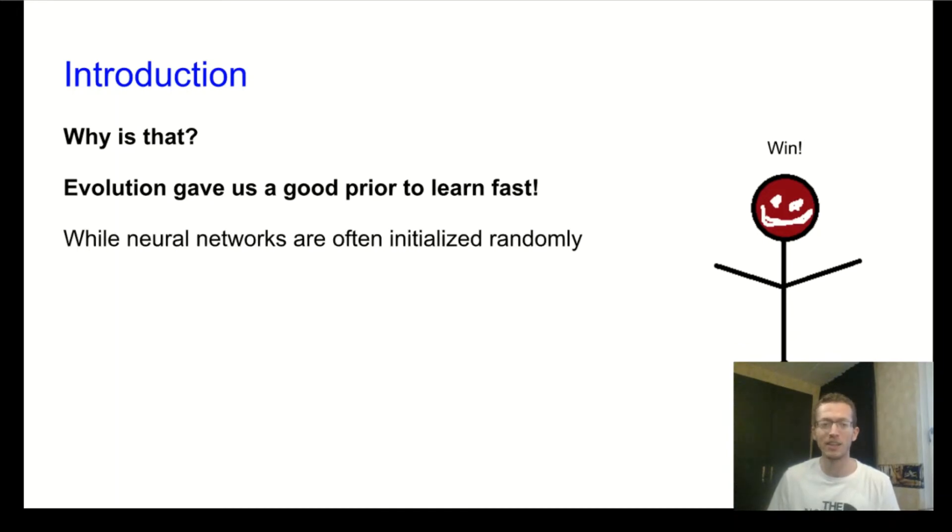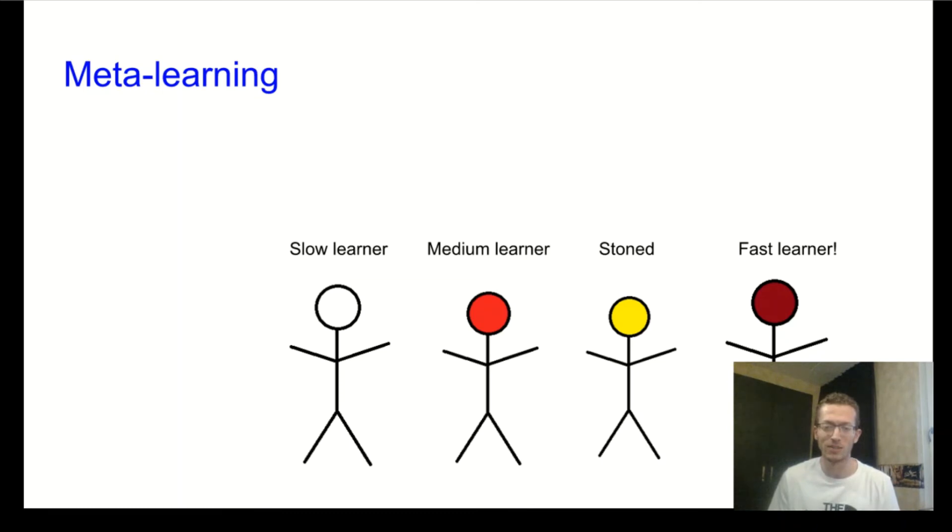On the other hand, neural networks are often initialized randomly. So what we would actually want to do is we want to do what evolution gave us. We want to find a prior for neural networks and allow it to learn more quickly. And that is precisely what meta-learning is about.